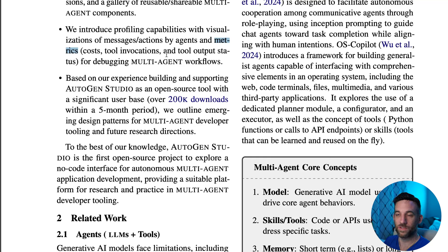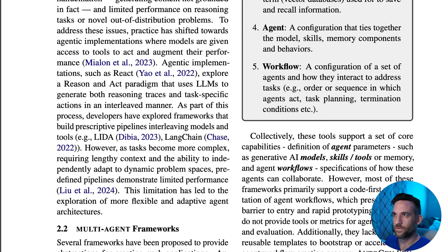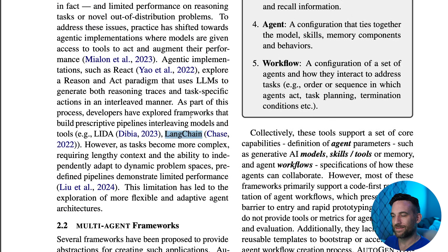It is hard to debug some of these multi-agent workflows, especially the more complex they get. If something fails, you can have logging and print statements, but still to see exactly how that specific agent failed and why it failed, it can be difficult. They have a related work section where they talk about agentic implementations such as ReAct, which is the reason and acting for LLMs, and LangChain from Harrison Chase, discussing some limitations and better architectures for multi-agents.